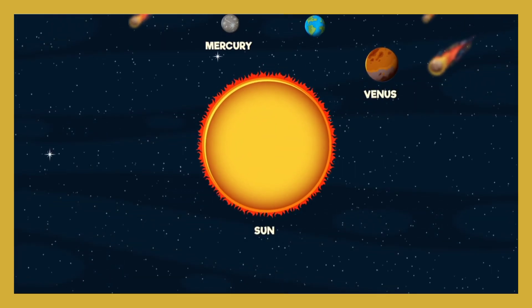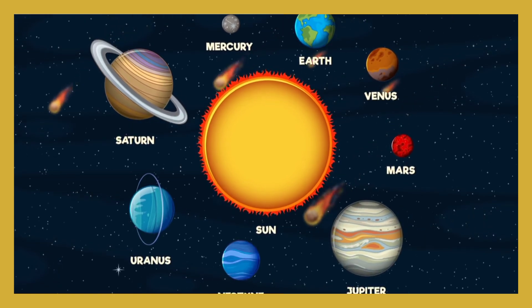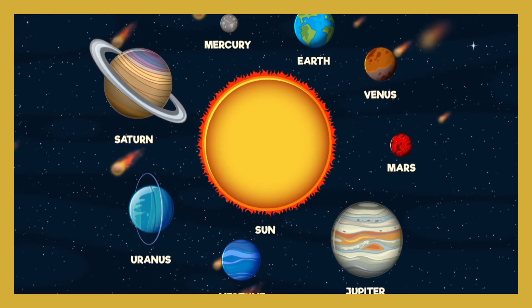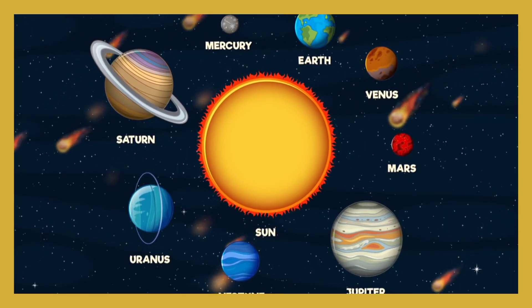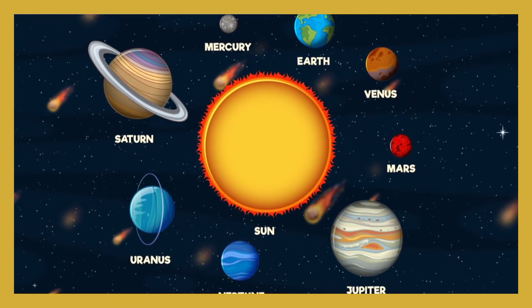Round and round the planets go, spinning fast or spinning slow. Moons and rings and asteroids too, there's so much in space to view.